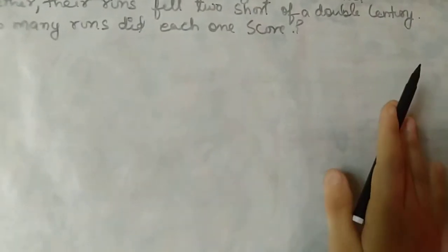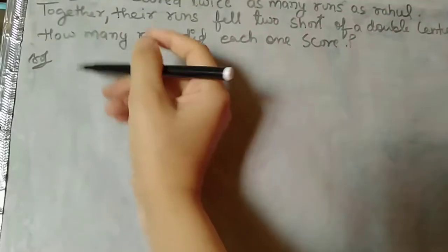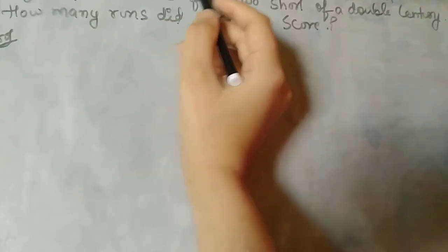A double century means 200 runs. So the question asks: how many runs did each one score? We need to find both of their scores. First, understand that Sachin's score is double of Rahul's.